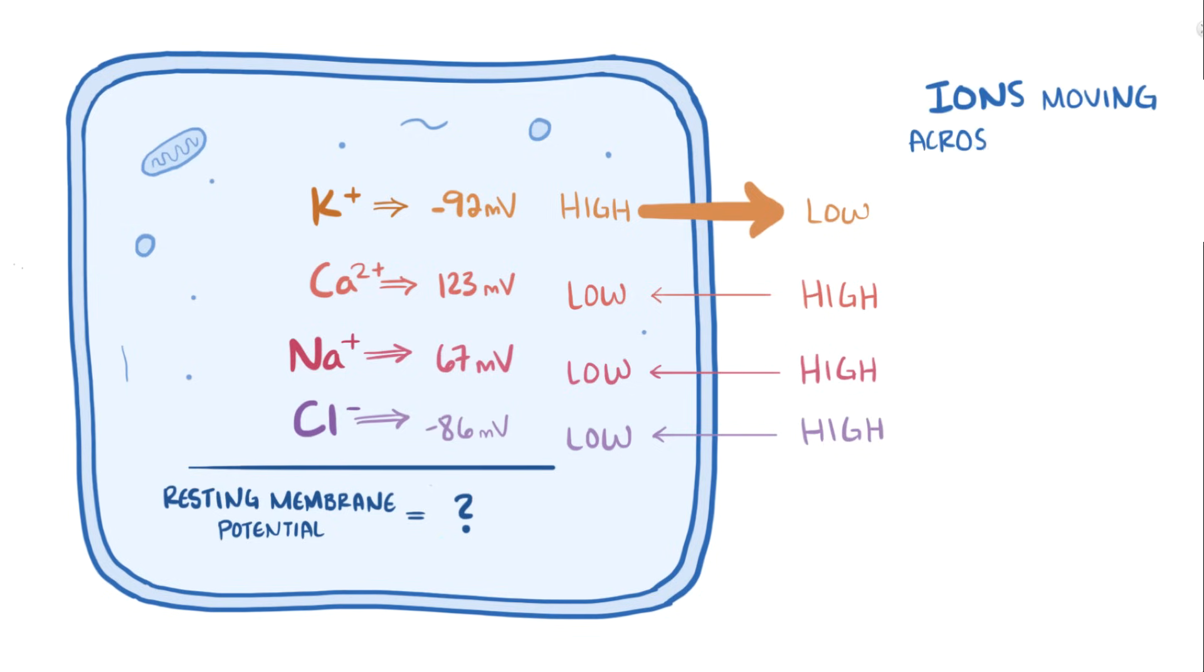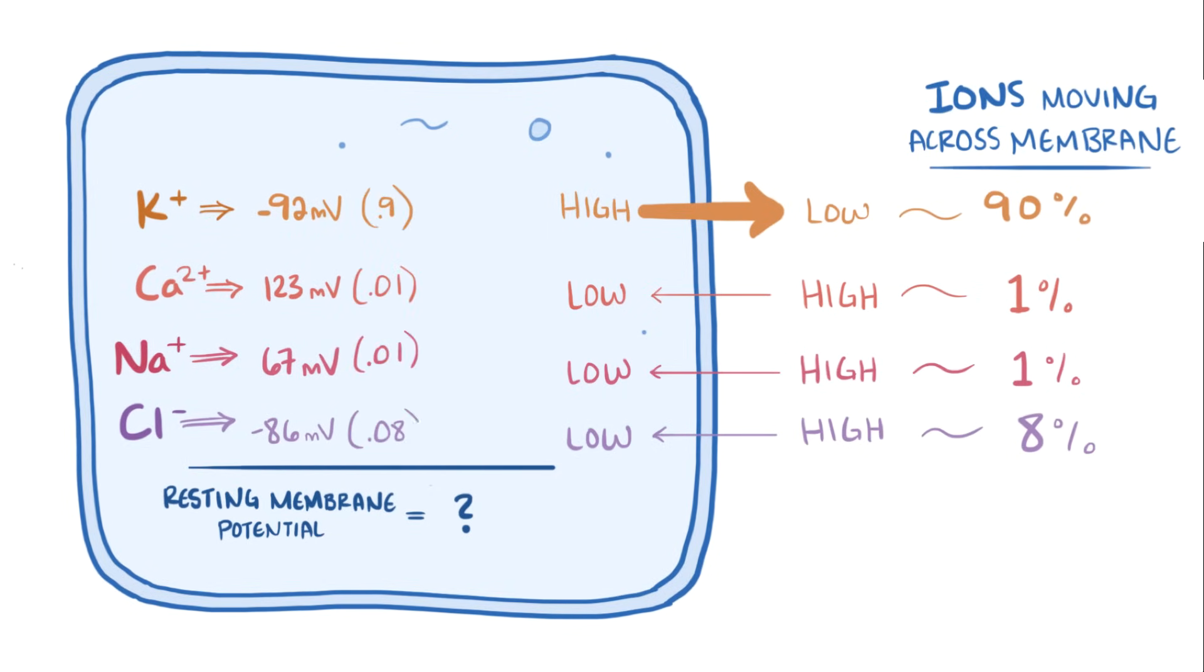Alright, so of all the ions moving across the cell membrane through the leak channels, let's say that 90% of them are potassium ions, whereas only 1% are calcium ions, 1% are sodium ions, and 8% are chloride ions. Now we can take these proportions and multiply them by the equilibrium potentials, and then add up the total to get the resting membrane potential of the cell. In this case it works out to 90% of –90 mV or –81 mV, plus 1% of 123 mV or 1.23 mV, plus 1% of 67 mV which is 0.67 mV, and plus 8% of –86 mV which is –6.88 mV, which gives a grand total resting membrane potential of –86 mV.